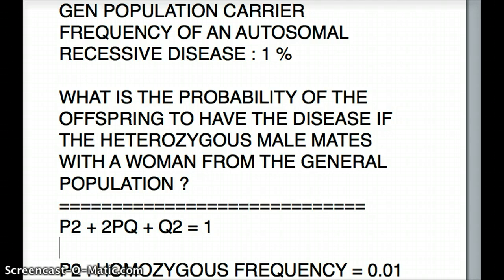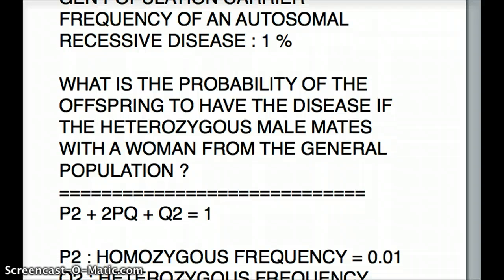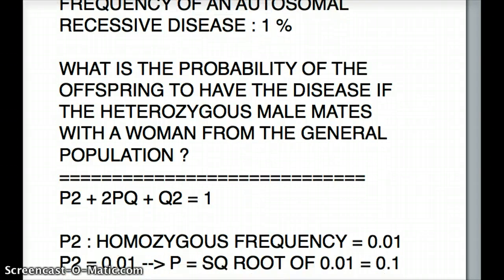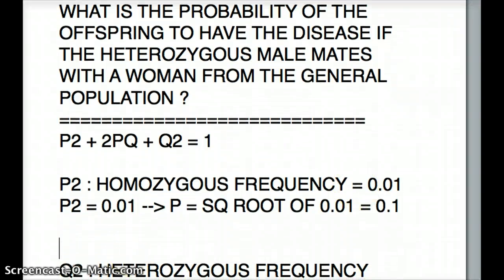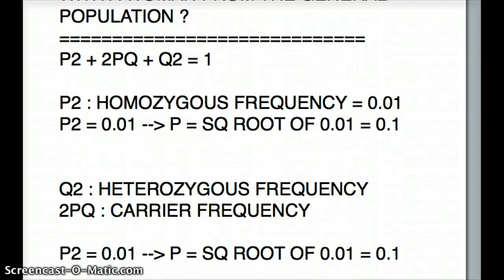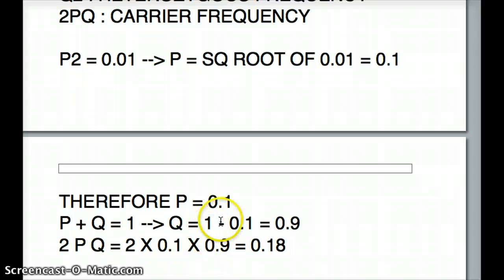Once we have p², we can find p by square-rooting 0.01, which gives us 0.1. Once we have the p value, we can find q because p + q = 1. So q = 1 − 0.1, which is 0.9. Now we have p = 0.1, q = 0.9, and p² = 0.01.